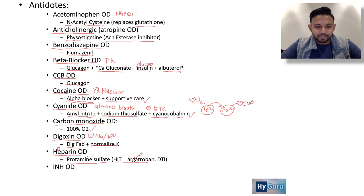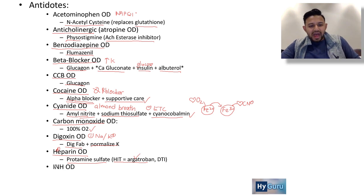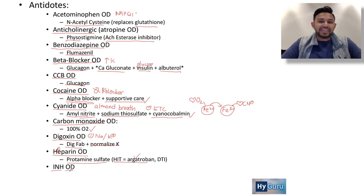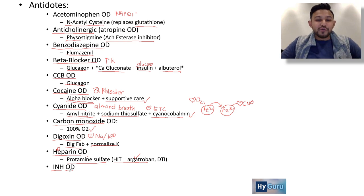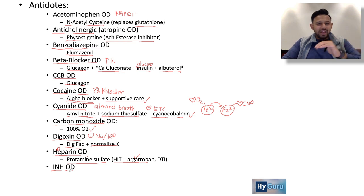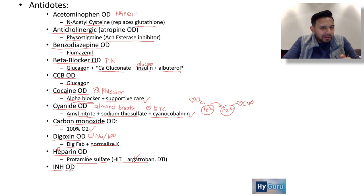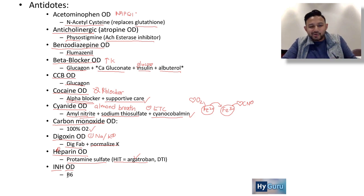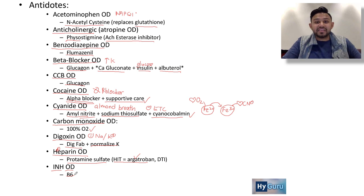INH — isoniazid — is classically used for tuberculosis. Isoniazid depletes vitamin B6, which can cause peripheral neuropathy. So in isoniazid overdose, you give B6 (pyridoxine).